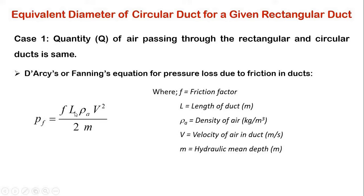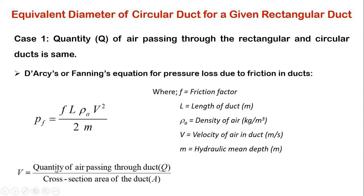Here F is the friction factor, L is the total length of duct measured in meters, rho_A is the mass density of air measured in kg per meter cube, V is the velocity of air in the duct measured in meters per second, and M is the hydraulic mean depth measured in meters. We can calculate velocity of air in a duct using the formula: quantity of air passing through duct Q divided by cross-sectional area of duct A.